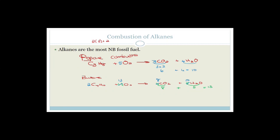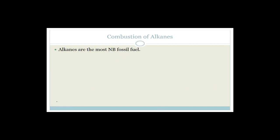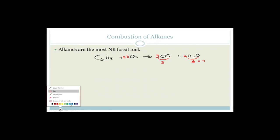Let me do one with carbon monoxide to make sure you can do this. Propane: C3H8 + O2 → CO + H2O. Three carbons → 3CO; eight hydrogens → 4H2O. Oxygens: 3 + 4 = 7 — that's 3.5 O2, so multiply everything by two: 2C3H8 + 7O2 → 6CO + 8H2O. Do you know the trick now? Good.